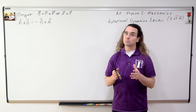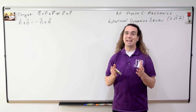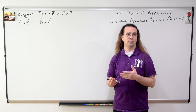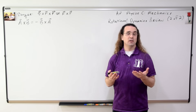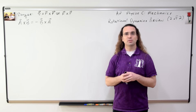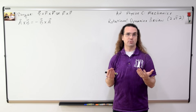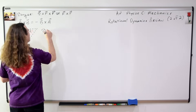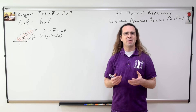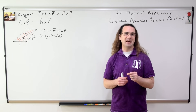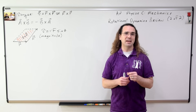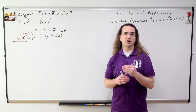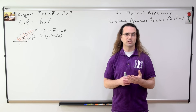And remember, the cross product is the area of the parallelogram created by those two vectors. For torque, it is the area with the sides R and F that create the parallelogram. And the magnitude of the torque is R times F times the sine of the angle theta, which is the angle between the direction of R and the direction of the force.